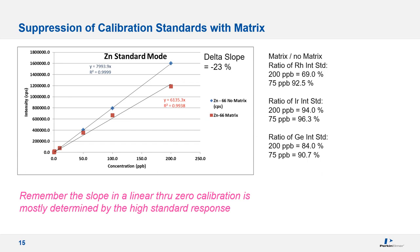Let's look at the calibration plot for zinc in standard mode. Blue points are calibration up to 200 ppb with no matrix, just the analytes of interest. Red dots are the calibration when calcium, sodium, magnesium, potassium, and silicon are added at increasing levels to the top three standards. When 25–50 ppm of calcium and sodium and 5–10 ppm of magnesium, potassium, and silicon are added, the slope of the zinc calibration is suppressed by 23%. In addition, different internal standards are suppressed by different amounts: 31% for rhodium, 6% for iridium, and 16% for germanium. Picking an internal standard can be critical in this case — it won't fix everything. A similar effect occurs in KED mode with helium cell gas, where the zinc calibration is suppressed by 16%, and scandium is actually enhanced by 5%.